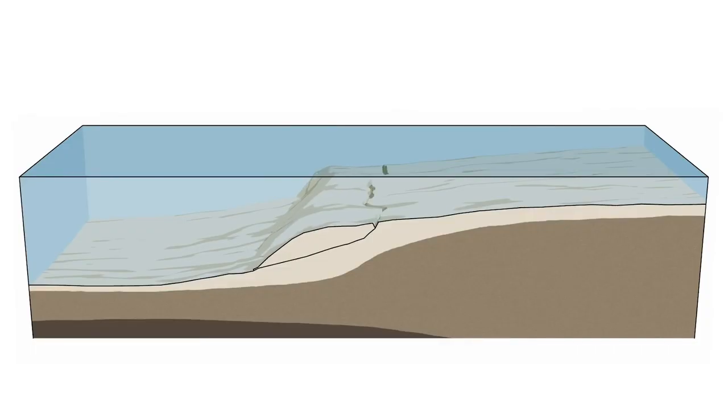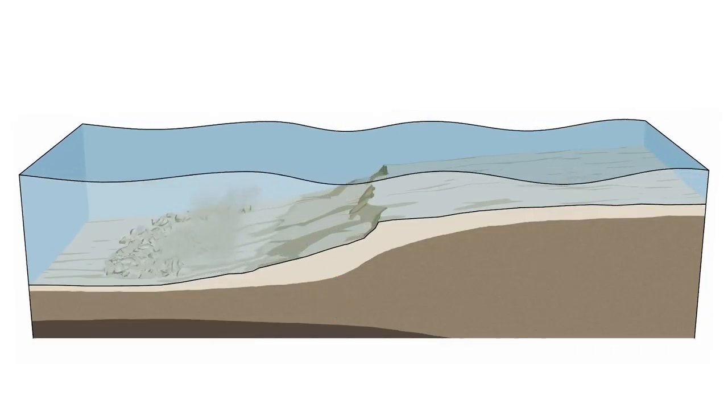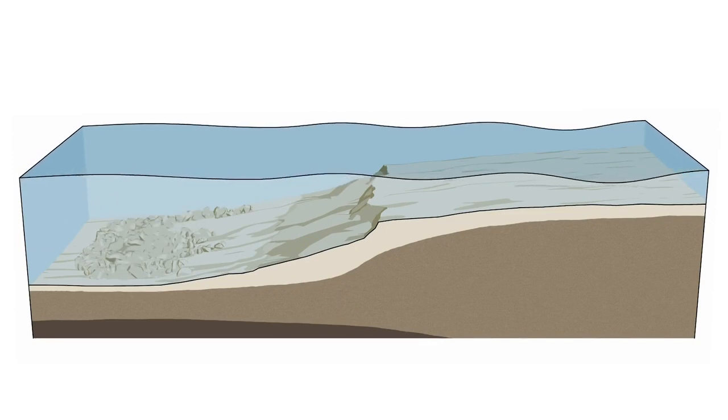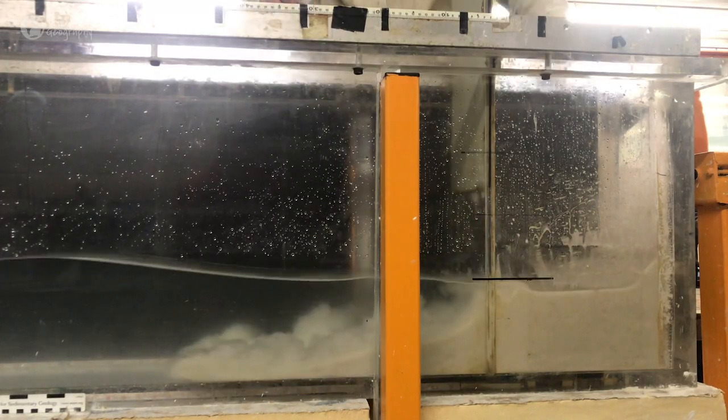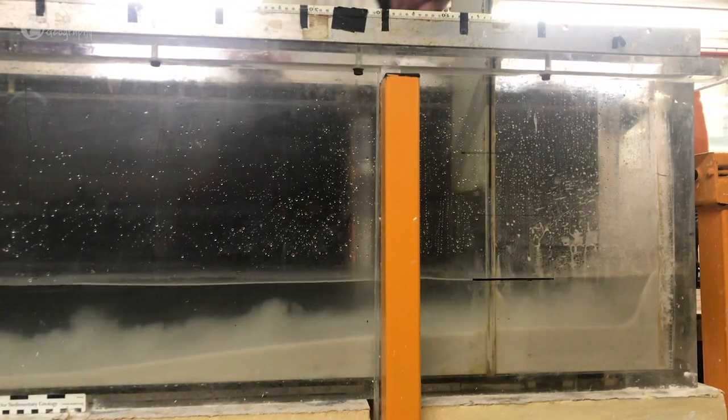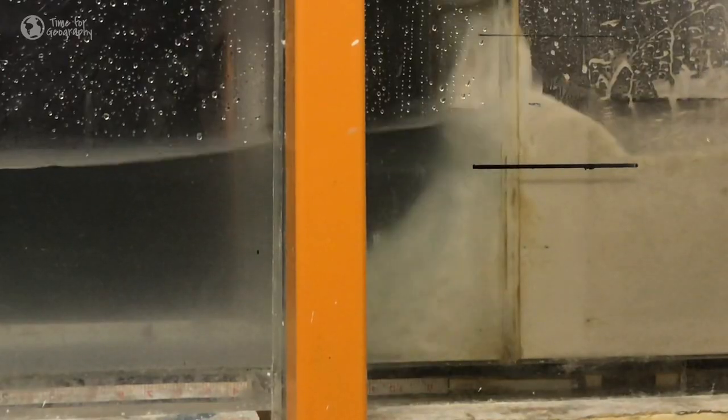Landslides on land can produce tsunamis if they fall into the ocean, but landslides can also occur completely underwater. This is what we have here, a submarine landslide. The sea bottom collapses, producing a landslide. At the same time the landslide displaces a large amount of water which creates tsunami waves.